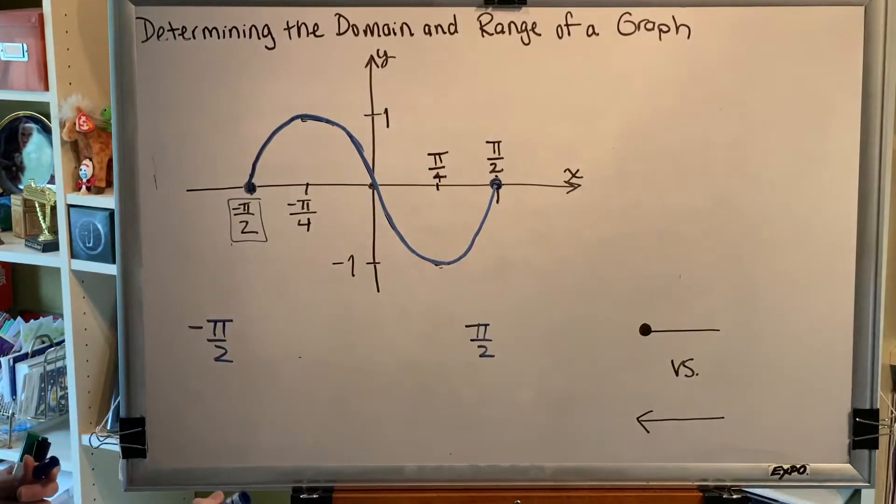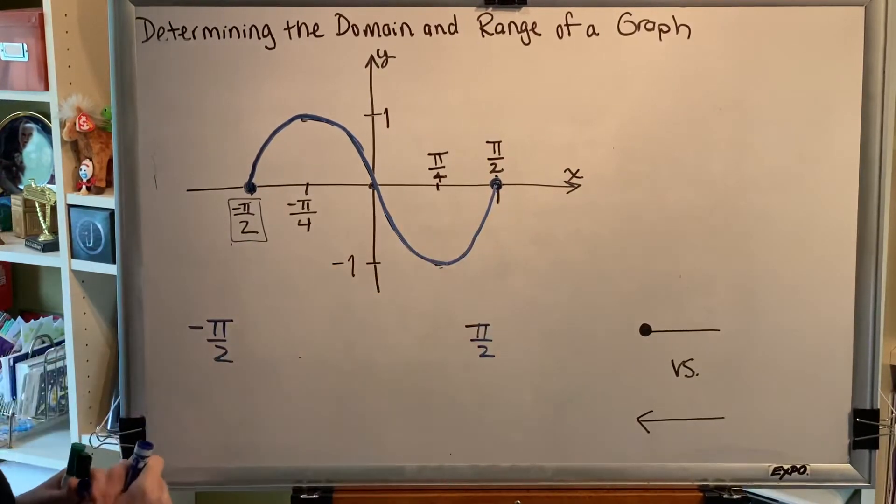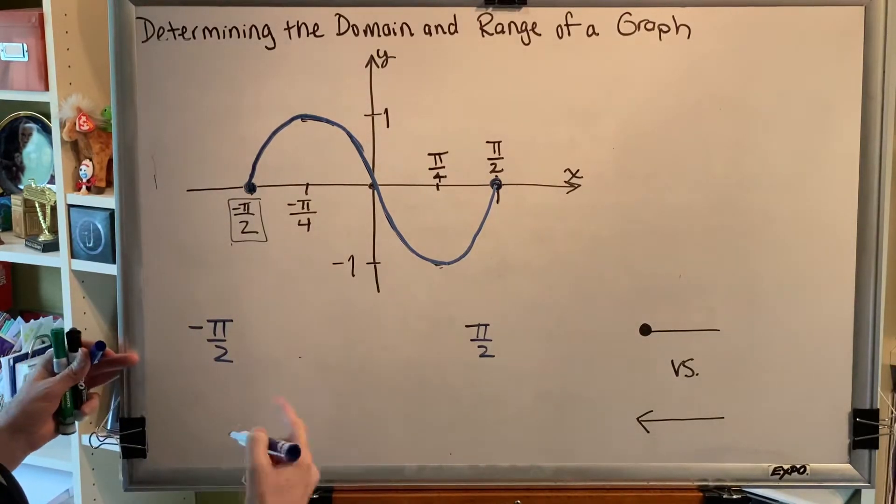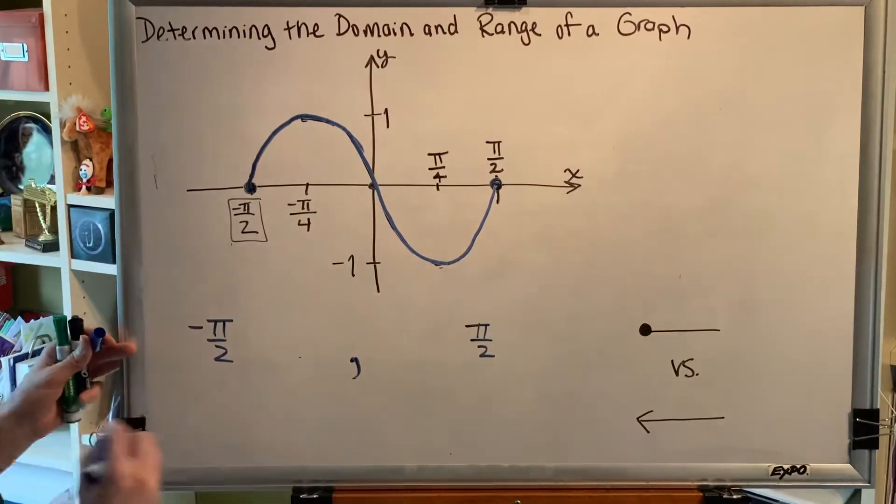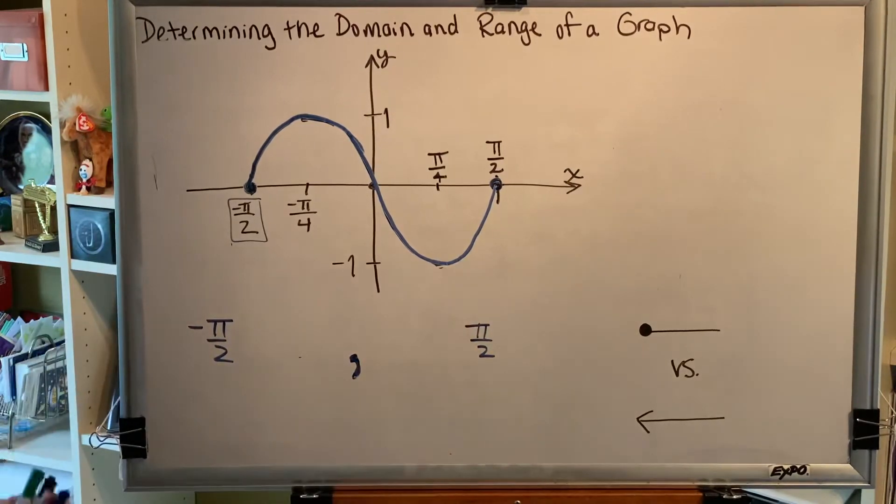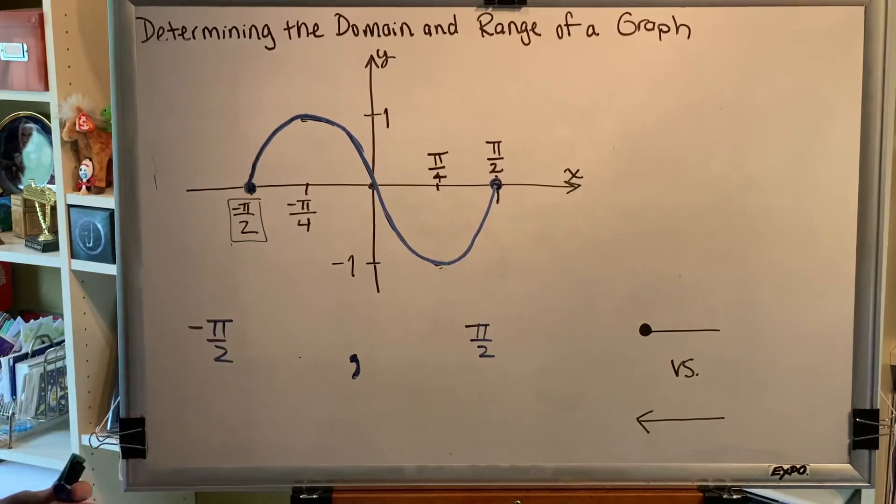So what that tells me is that there are an infinite number of x's between negative pi over 2 and positive pi over 2, and we want all of them. In other words, this is an interval. So we separate these two values by a comma to indicate we want all of the values in between. What about the endpoint values?